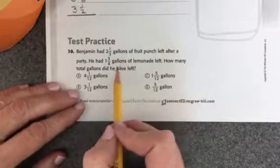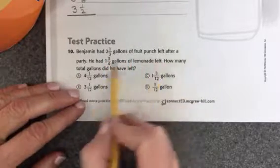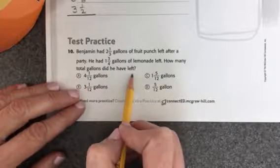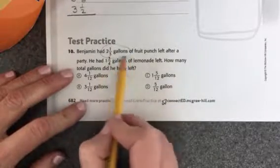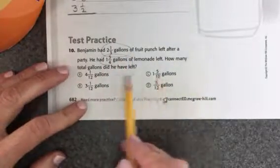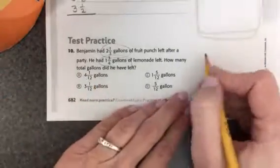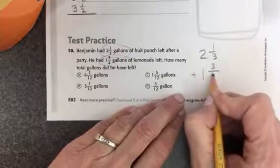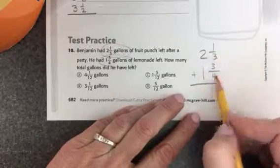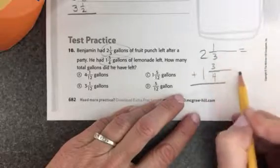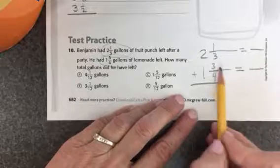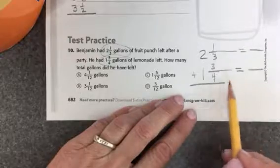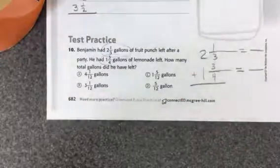Okay, so let's look at number 10. Benjamin had 2 and 1 third gallons of fruit punch left after a party. He had 1 and 3 fourth gallons of lemonade left. How many total gallons did he have left? I'll need to add this number and this number together to determine how many gallons he had left. So I'll write 2 and 1 third and 1 and 3 fourths in a column. And I can see that I do not have a common denominator. So I'll need to get a common denominator. So I need to think of multiples of 3 and multiples of 4 to get my common denominator.